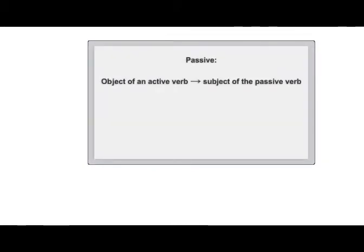As you probably know already, in the passive, the object of an active verb becomes the subject of the passive verb. The person or thing that performed the action of the verb is called the agent, or the doer of the action.